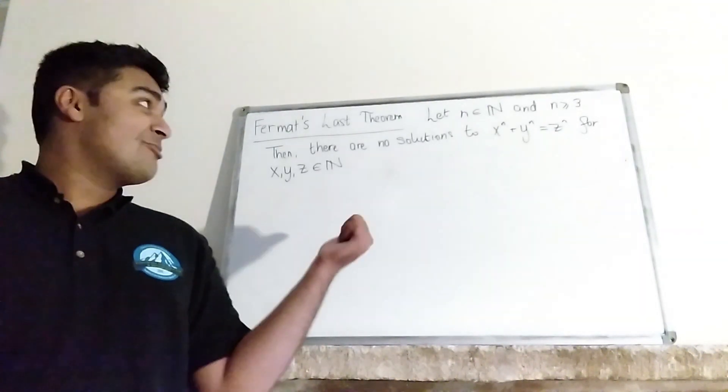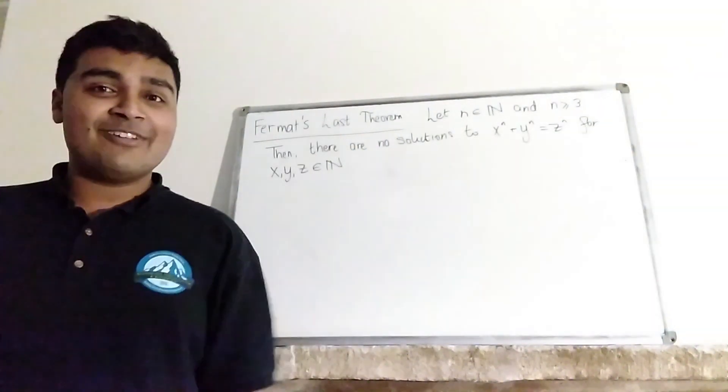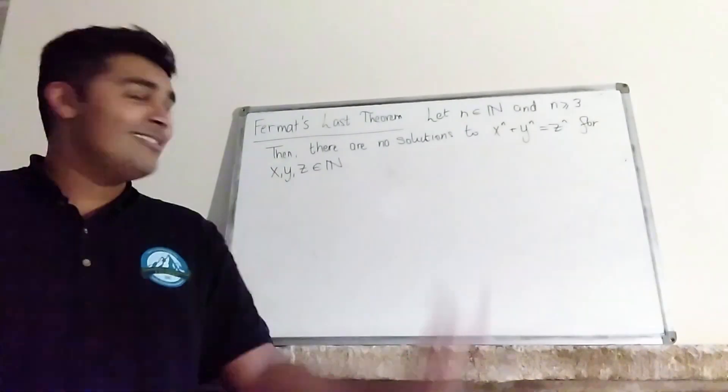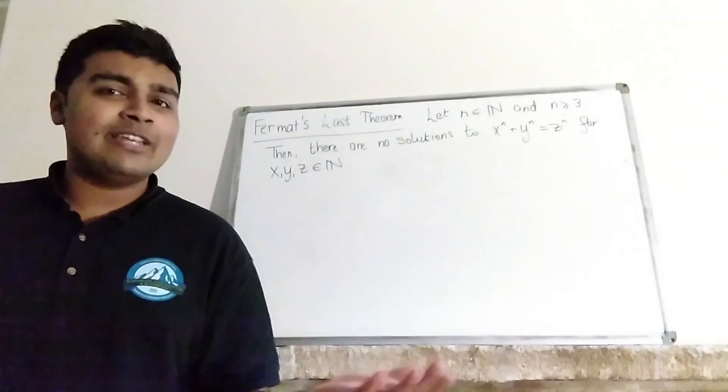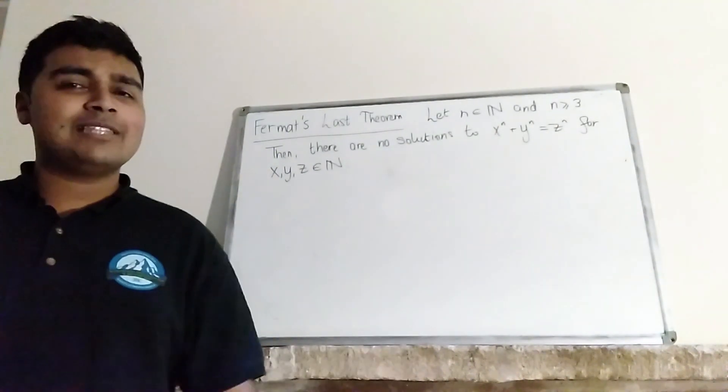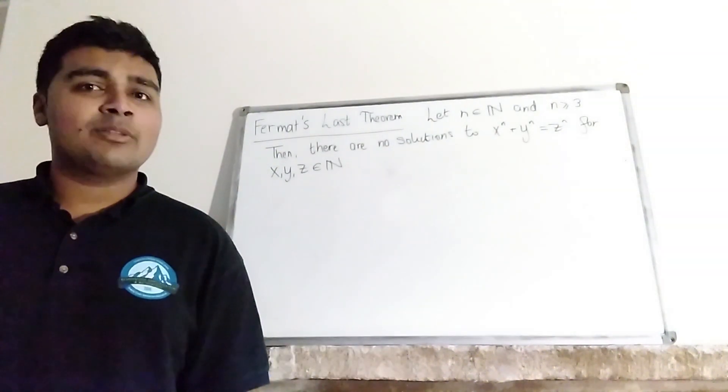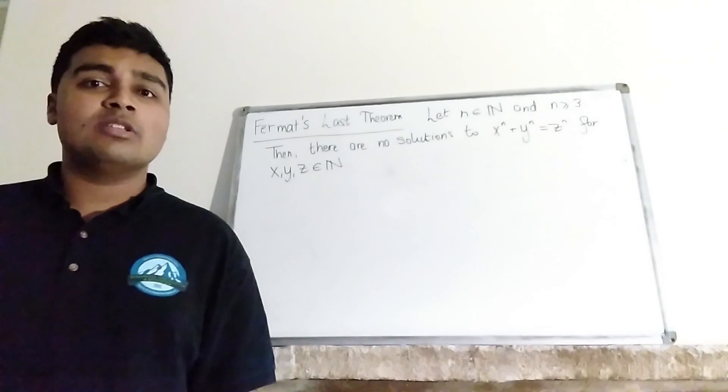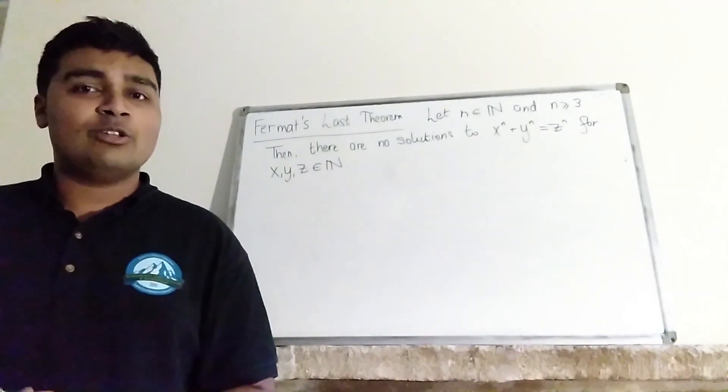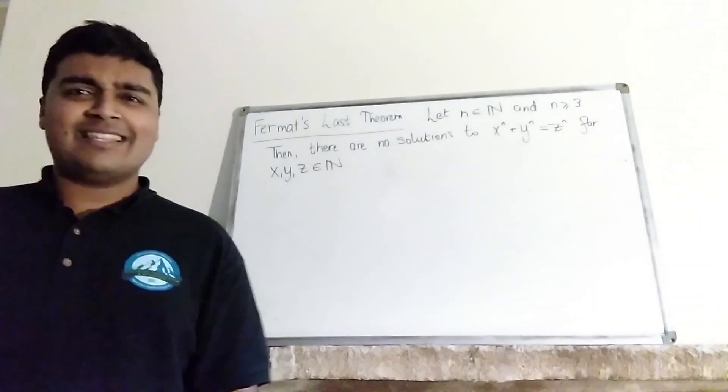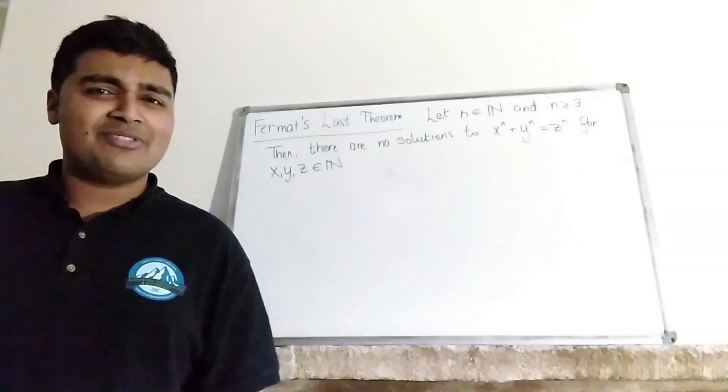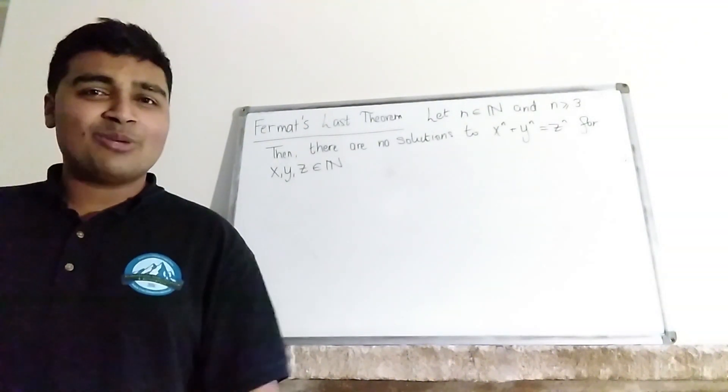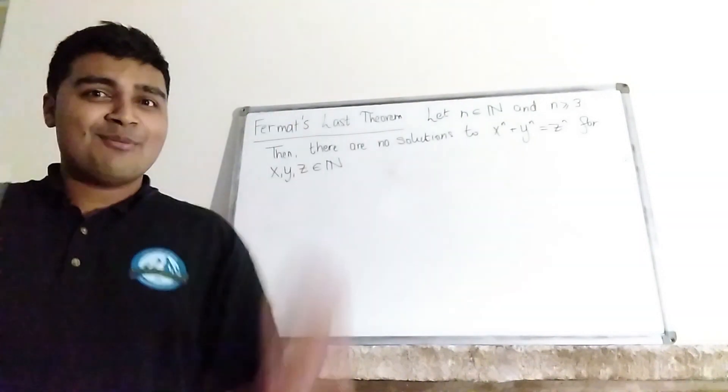So anyway, I'm going to try and prove, in inverted commas, Fermat's last theorem in a very short video. It's definitely not a proof and I encourage you to try and spot the mistake. At the end I will say what the mistake is, but the aim of this video is to just highlight the importance of being very careful in your proofs because otherwise you could claim to have proved something that took over 350 years to prove. Anyway, I'm going to stop waffling and get into today's proof.